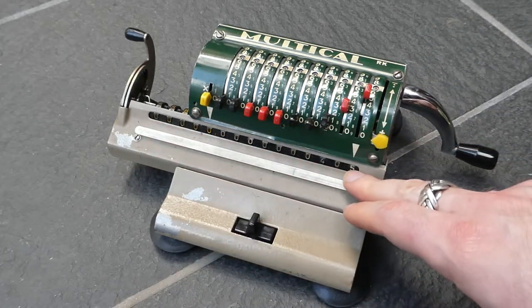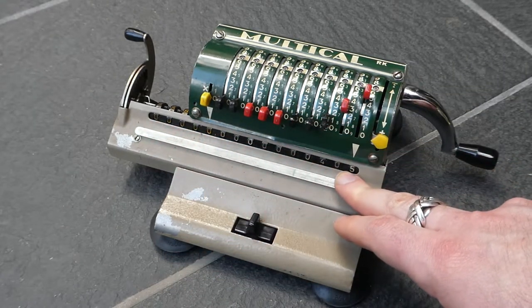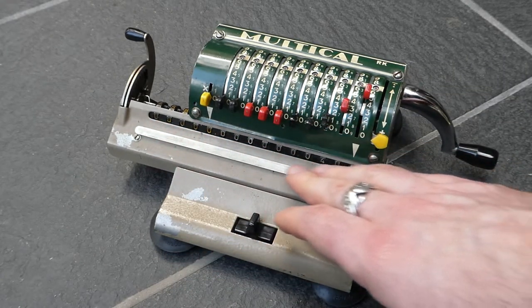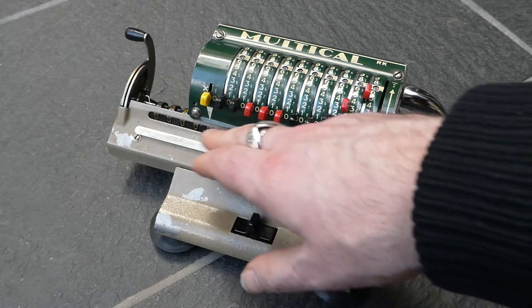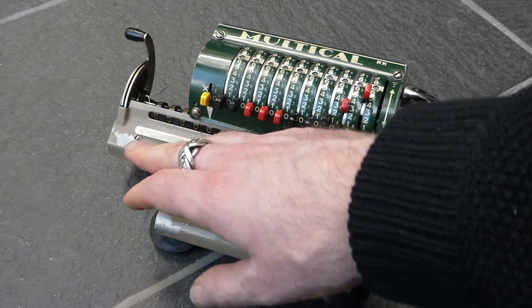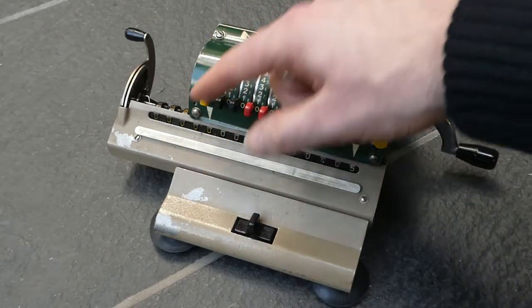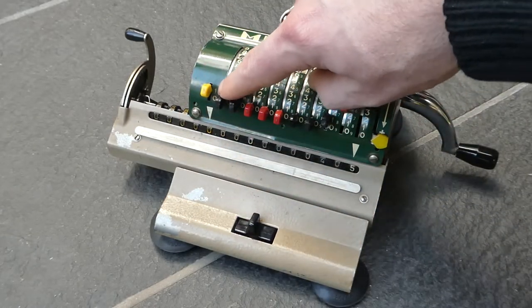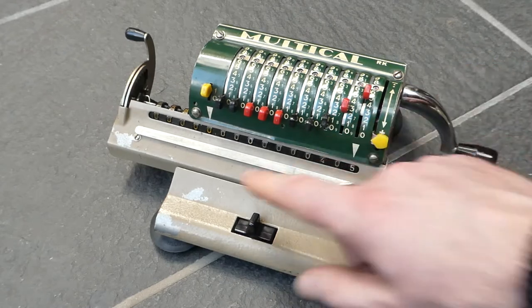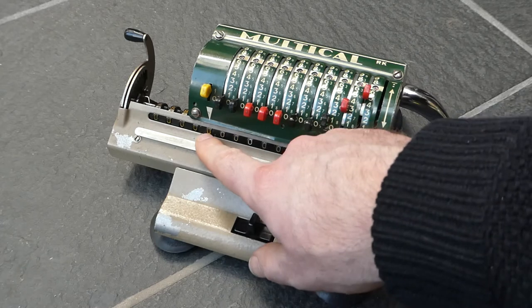The carriage has one long register of 15 digits so you can do very large calculations on them. But you can also split this register by using the top five digits as a counter. To do that you flip this upwards to one. So now every time you turn the crank, one gets added here, causing these five digits to be the counter.